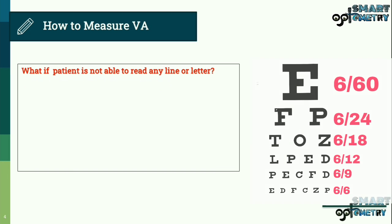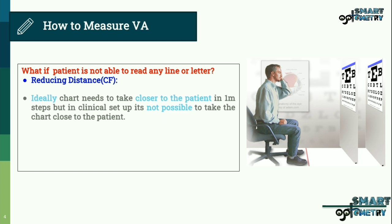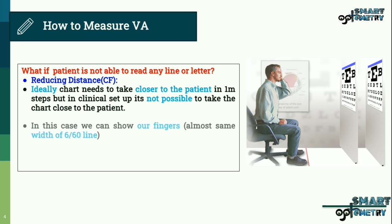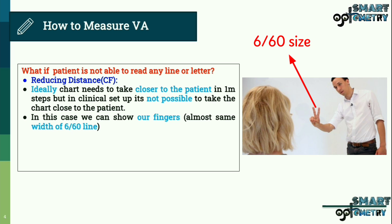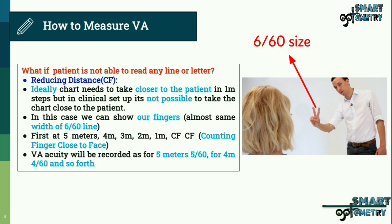What if the patient is not able to read any letters? The next step is reducing distance. Ideally the chart should be moved closer in 1-meter steps, but in a clinical setup where the chart is fixed to the wall, we can show our fingers, since the width of a finger is almost the same as the width of the 6/60 line. We test at 5 meters, then 4, 3, 2, 1 meter, and finally counting fingers close to the face. Visual acuity is recorded accordingly — for example, 5/60 if the patient counts fingers at 5 meters, 4/60 at 4 meters, and so forth.